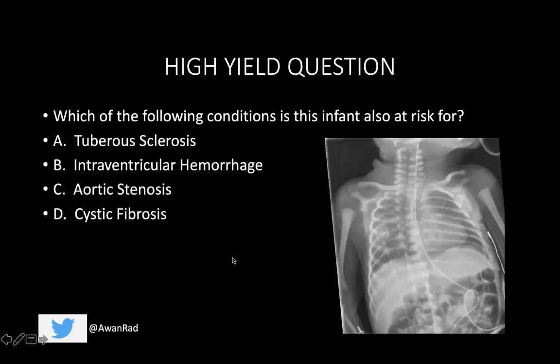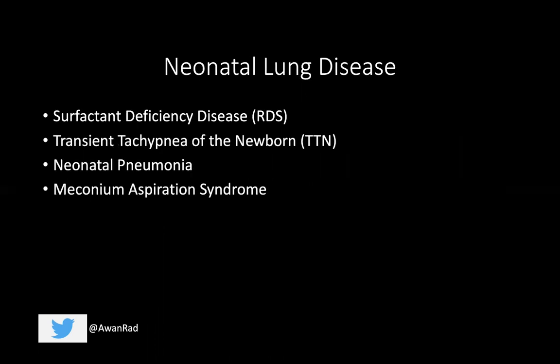We're going to start with a high-yield question as always. Which of the following conditions is this infant also at risk for? We have a chest x-ray of a newborn infant. Is the condition this infant is also at risk for tuberous sclerosis, intraventricular hemorrhage, aortic stenosis, or cystic fibrosis? We're going to come back to this question at the very end of the lecture. So let's go ahead and get started with neonatal lung disease.